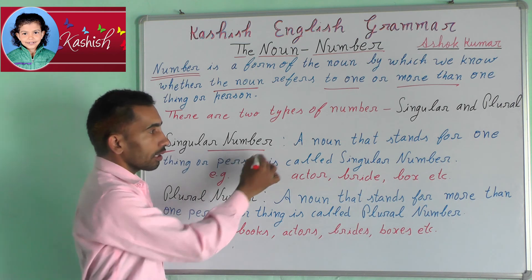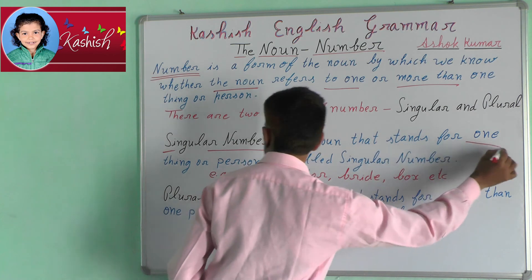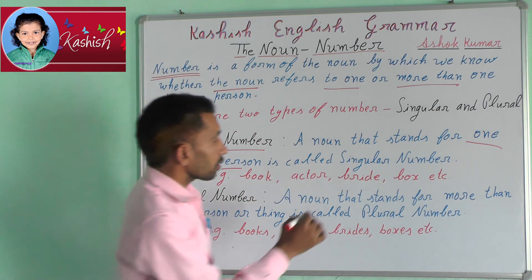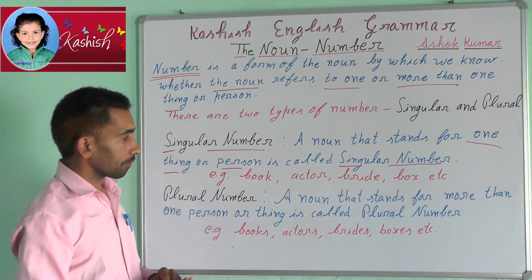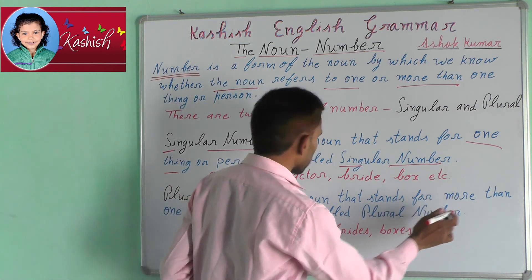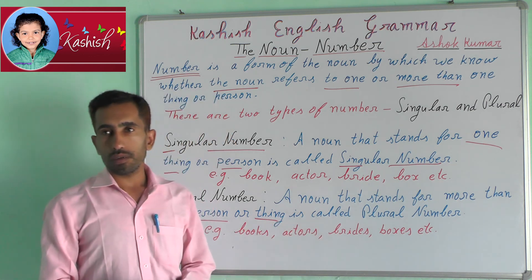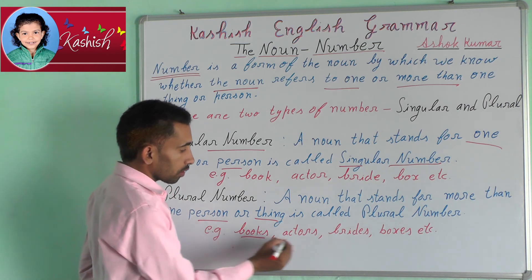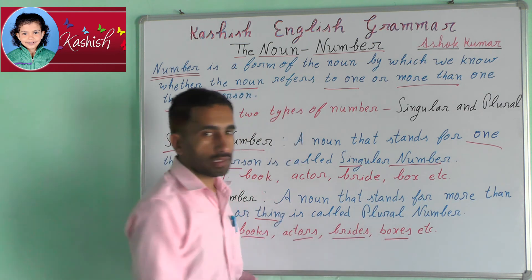Singular number: a noun that stands for one thing or person is called singular number. Plural number: a noun that stands for more than one person or thing is called plural number. For example: books, actors, brides, boxes, etc.